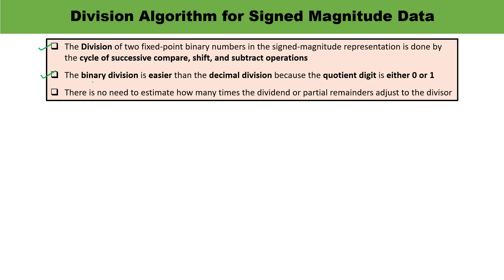The division operation for two fixed-point binary numbers in signed magnitude data is the repetition of comparison, shifting, and subtracting. In this particular case there is no need to estimate how many times the dividend or partial remainder needs to be adjusted. So binary division is very much simpler.